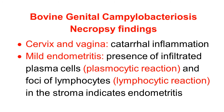We discuss here the necropsy findings of bovine genital campylobacteriosis. An important finding is that the cervix and vagina show catarrhal inflammation with plenty of mucus. Another important finding is mild endometritis, showing presence of infiltrated plasma cells and foci of lymphocytes in the stroma. Two types of reactions are observed: plasmocytic reaction and lymphocytic reaction. This is characteristic.